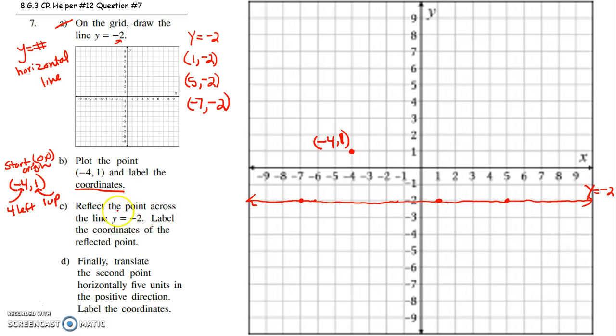Now reflect that point across the line y equals negative 2. Label the coordinates of the reflected point. All right. So then what we're doing now is we're reflecting it over this line. So it's like if this is where you had a mirror, where would that image be? Well, let's see, if this one is 1, 2, 3 above the line of reflection, 3 above line of reflection,